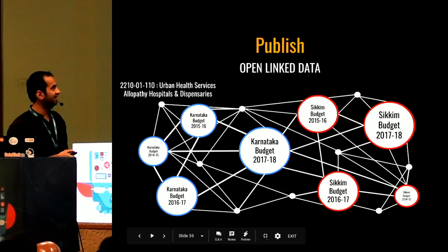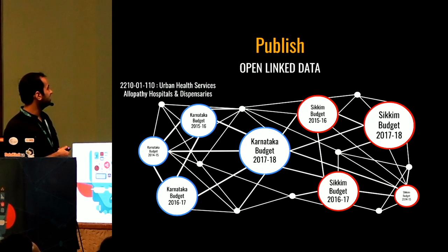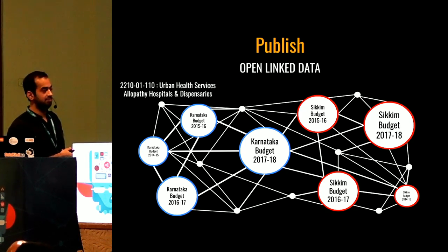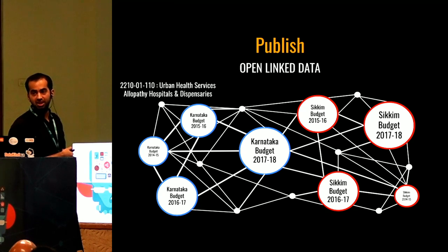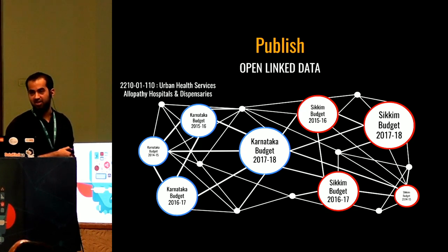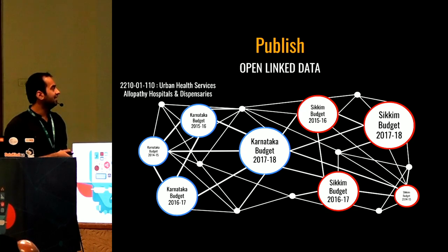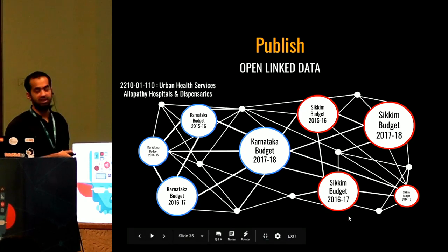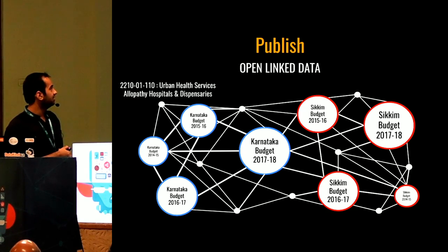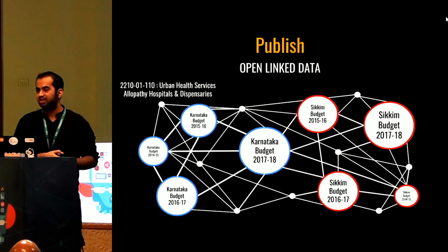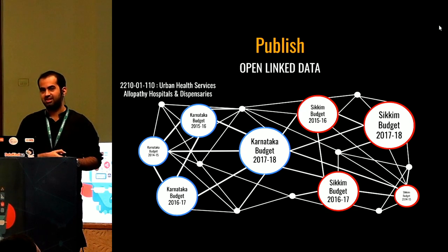How does linked open data come into the picture? The unique ID we discussed — for example, 2210011110, urban health services, allopathy hospitals, and dispensaries — with the help of the Comptroller and Auditor General, these three codes need to be unique across all states. There is a mandate. So now with this unique ID, you can query any state and link the whole information, connecting Karnataka's 2017-18 budget with previous years and comparing it with Sikkim's budget. This kind of analysis earlier used to take months, but now with open linked data, you can do it in just 15 minutes.